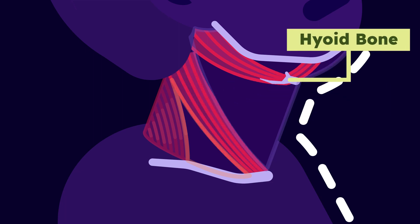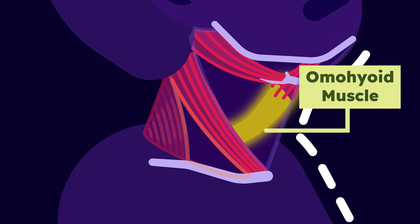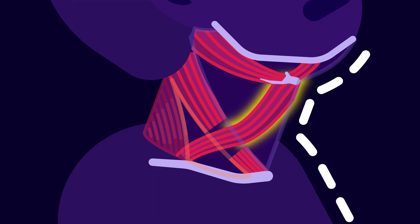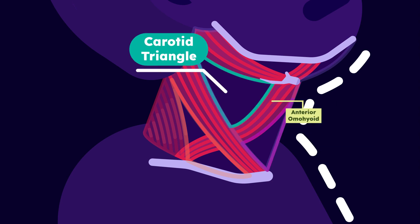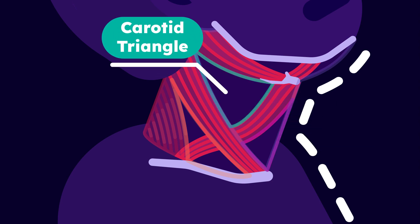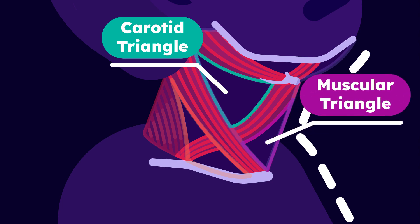From the hyoid bone, the omohyoid muscle will also arise and go behind the sternocleidomastoid muscle until it reaches the back part of the neck. The anterior belly of the omohyoid muscle will give us two more triangles: the carotid triangle, which is located above the anterior belly, and the muscular triangle, which is located below the anterior belly.